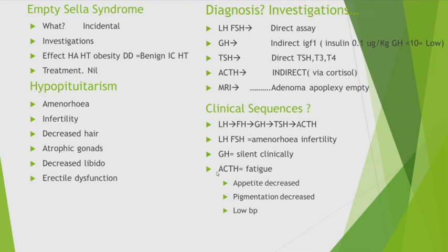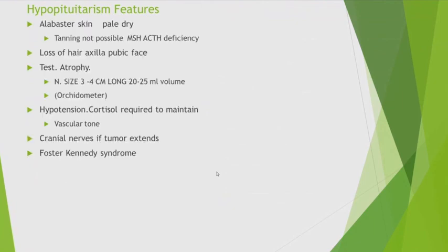ACTH deficiency produces fatigue and decreased appetite. Regarding pigmentation: melanocyte-stimulating hormone (MSH) is also reduced since it is produced by the same cells as ACTH. Reduced melanin produces pallor — alabaster skin — without tanning. ACTH deficiency also causes low blood pressure. Loss of hair is also a feature, as already noted.